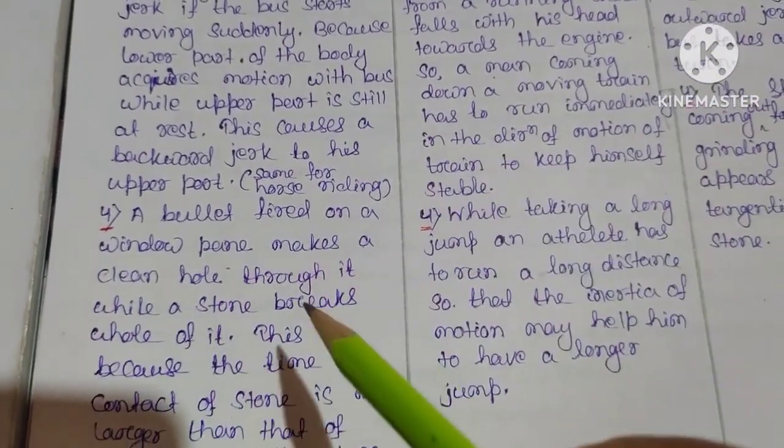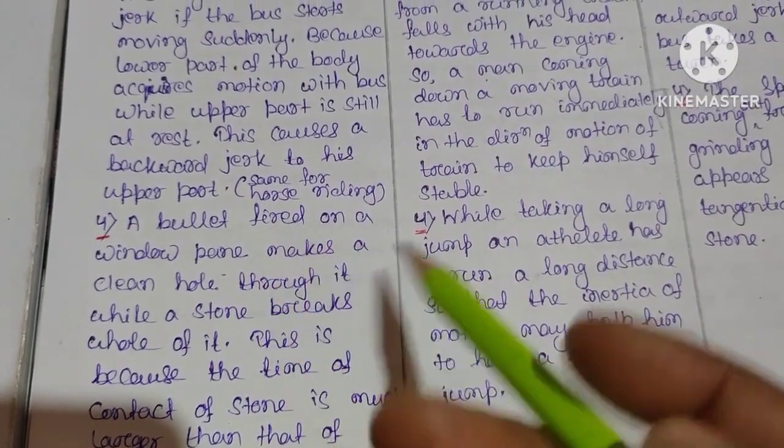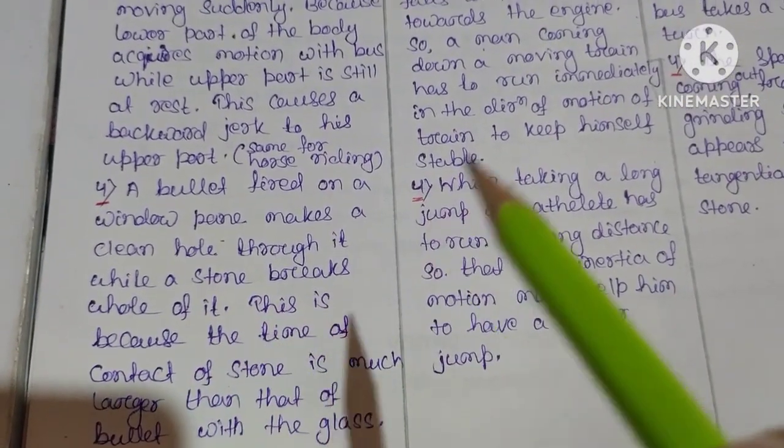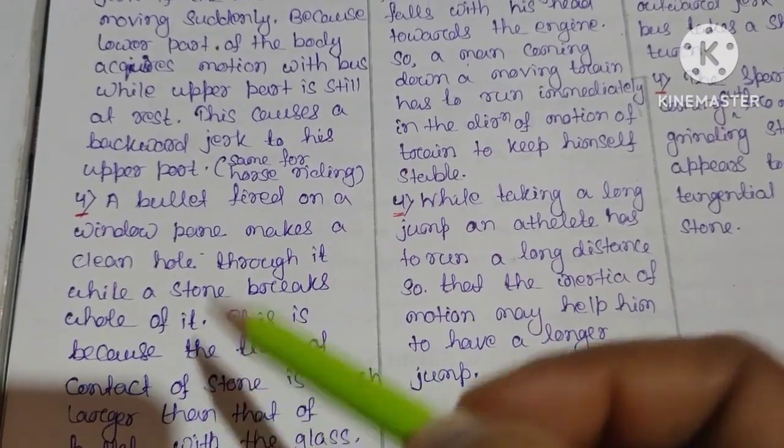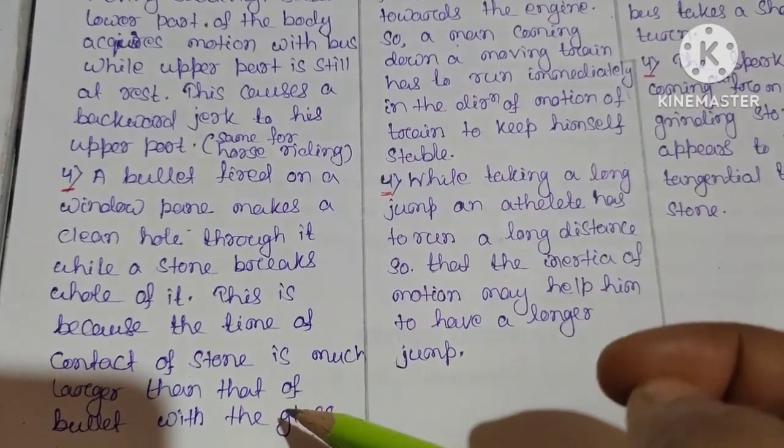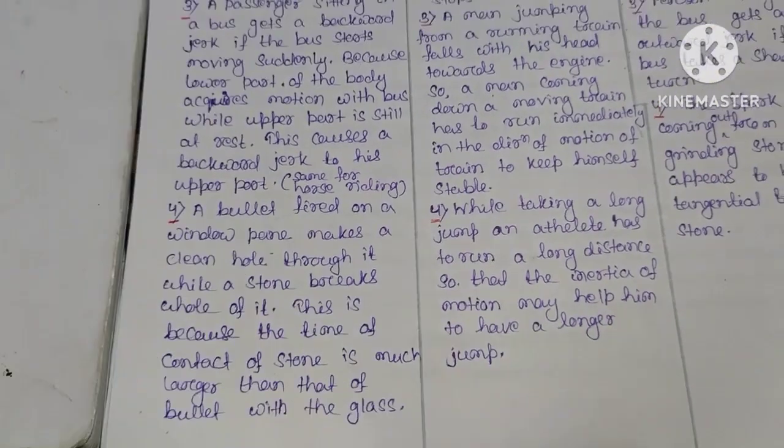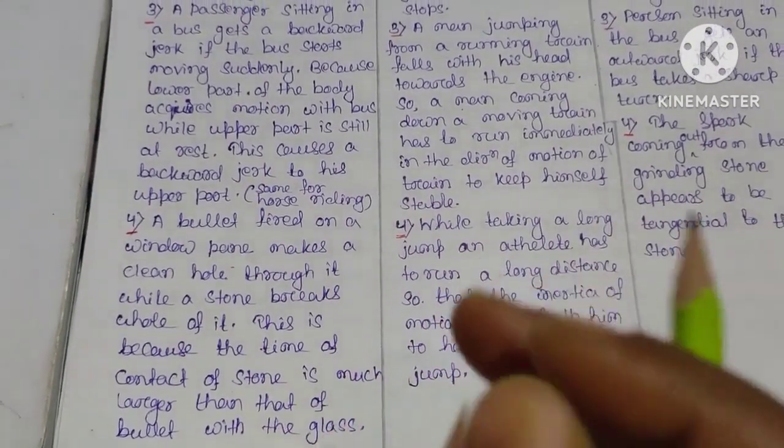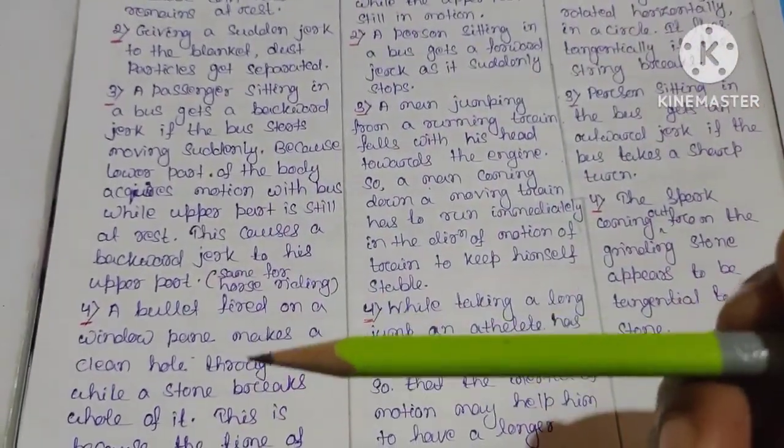Some examples: a bullet fired on a window pane makes a clean hole through it. When you have a bullet fired, you will have a clean hole. The stone breaks all of it. When you have a stone, you will have a wider hole. This is because the time of contact of the stone is much larger than that of the bullet with the glass.